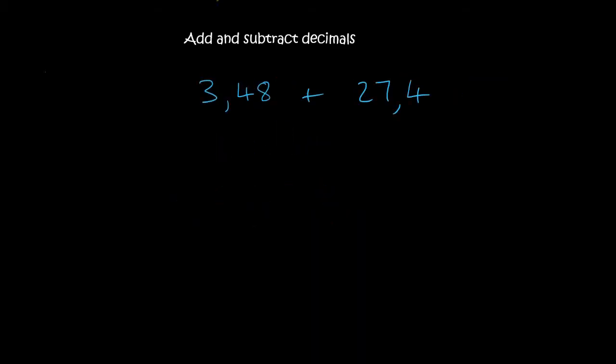Now here's where people make mistakes. If you do the column method, which you should, you should put the commas beneath each other. Then it's going to be 3.48. Then if you fill in the 27, it's going to look like that. And then the 4 goes in that position.